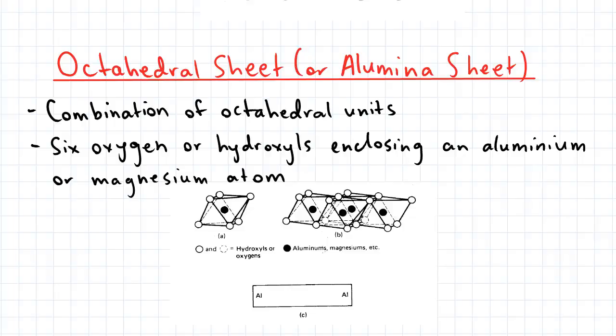Schematically, the octahedral sheet is represented by a rectangle. Also notice that the rows of oxygens or hydroxyls occur within two planes.